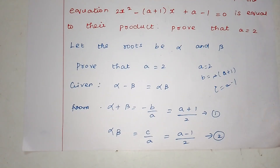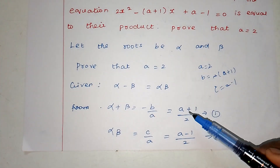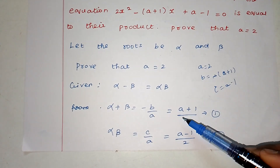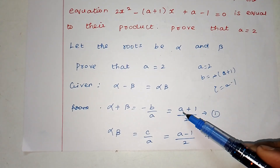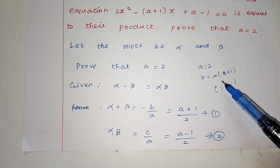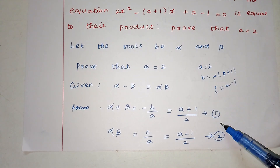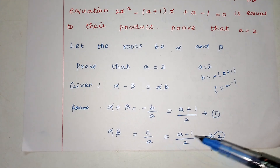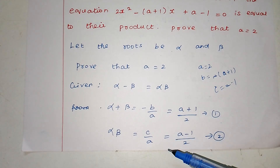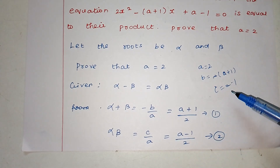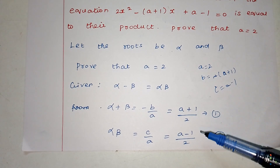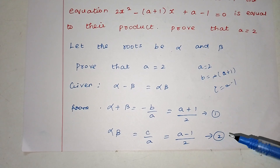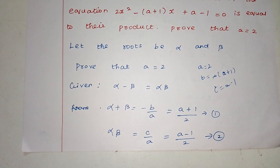Then, alpha plus beta equals minus B by A: minus into minus gives plus, so alpha plus beta equals (a+1) by 2. This is equation 1. Alpha into beta equals C by A, which is (a-1) by 2. This is equation 2.